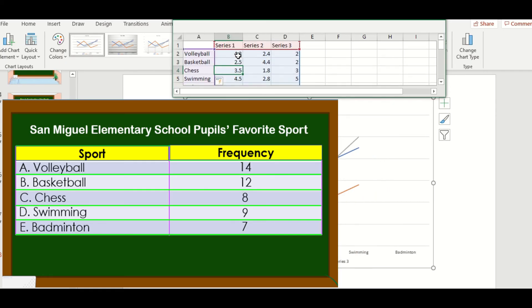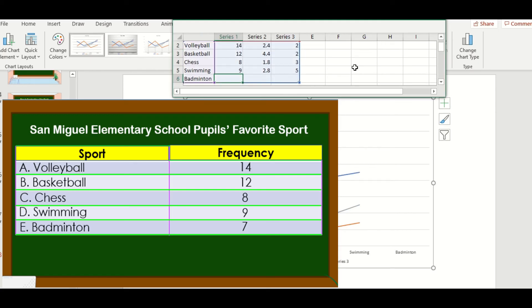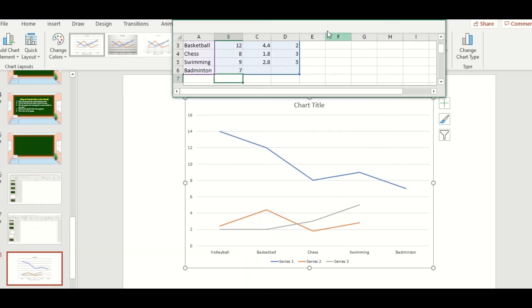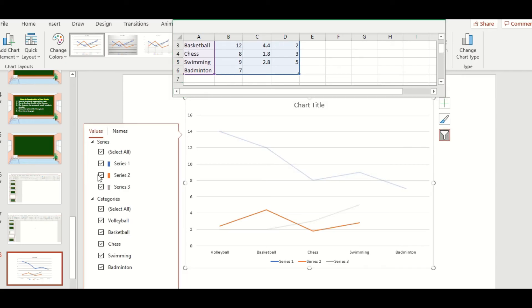Next is we're going to enter the frequency. For volleyball, it is 14. Basketball is 12. Chess is 8. Swimming is 9. Badminton is 7. Then just click here, chart filters. First, we're going to uncheck series 2 and series 3. Then click apply.